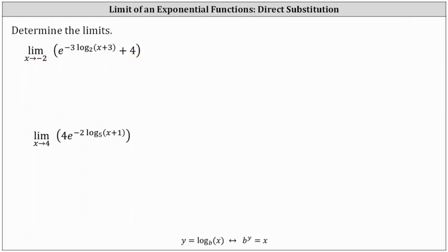Performing direct substitution, we have e raised to the power of negative three times log base two of negative two plus three, and then we still have plus four. Notice how the plus four is not in the exponent.